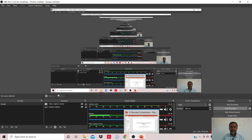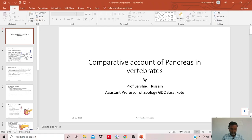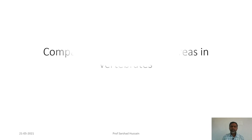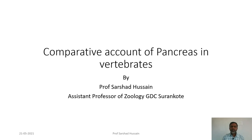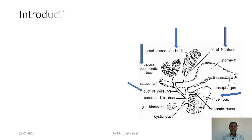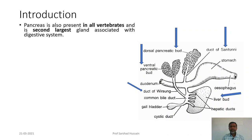Let's have another topic for discussion: a comparative account of pancreas in vertebrates. Pancreas is the second largest gland of the vertebrates, next to the liver, and pancreas is present in almost all vertebrates.